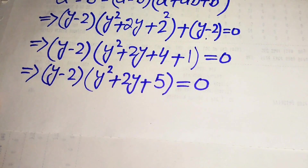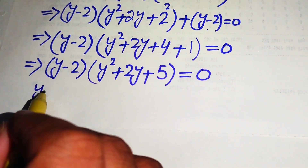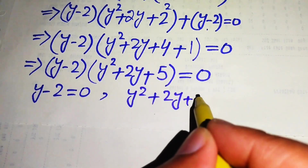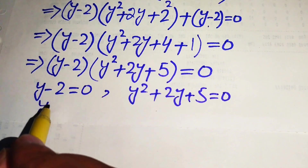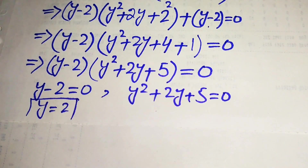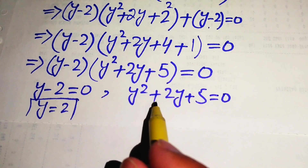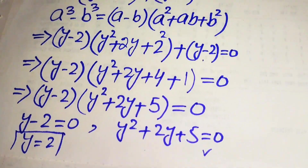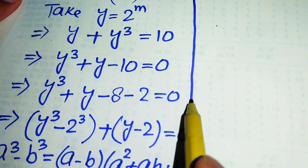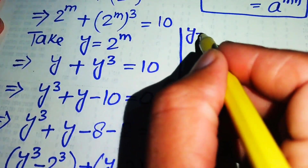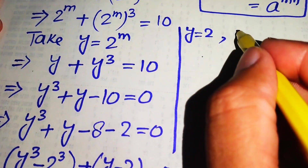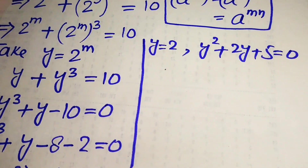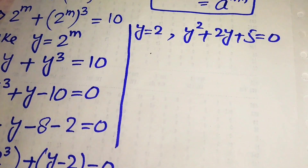We have two cases. The first case is y minus 2 equals 0, and the second case is y squared plus 2y plus 5 equals 0. From the first case we get y equals 2, which is a real value. We copy down both cases: y equals 2 as the first root, and y squared plus 2y plus 5 equals 0 as the second.